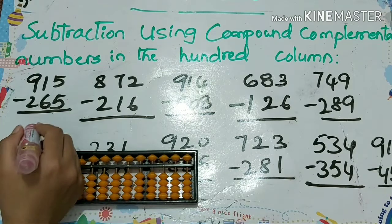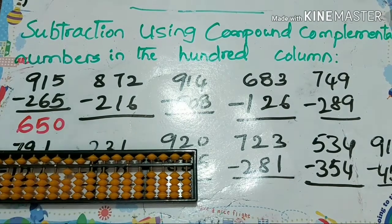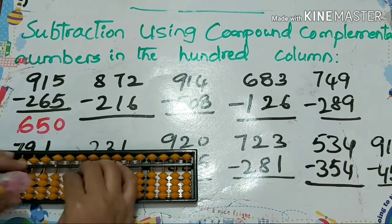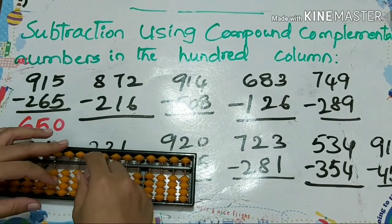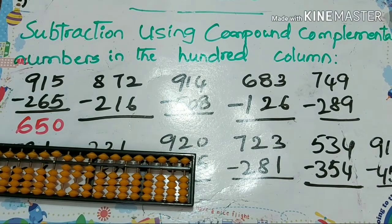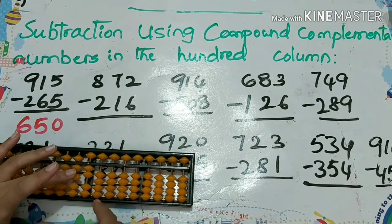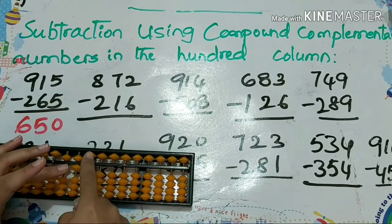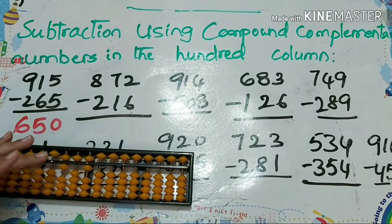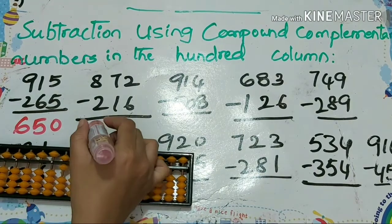Next one: 872 minus 216. So minus 2, minus 1, minus 6. How to do minus 6? Papa down, mama down, baby's down. Answer is 656.